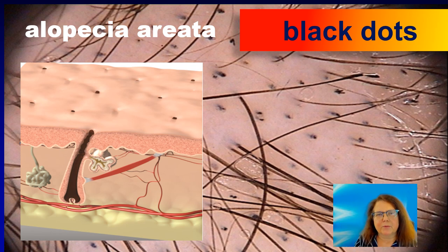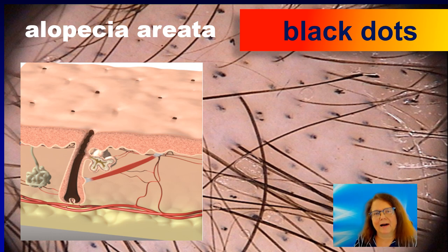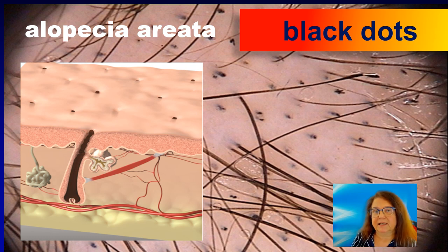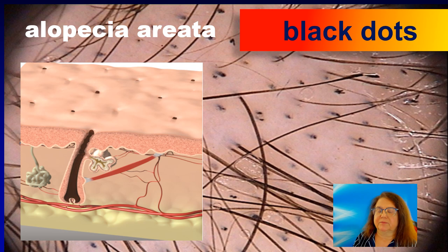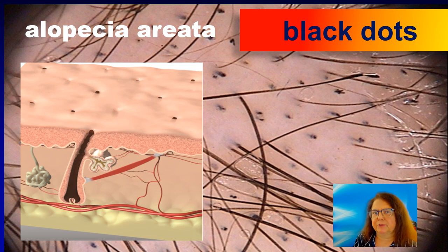In this image we see the typical black dots in trichoscopy. Are they typical for alopecia areata? Yes, they are. Are they specific for alopecia areata? No, they are not. There are many diseases in which black dots may be present, including other types of anagen effluvium, but also trichotillomania, and even sometimes black dots may be present in patients with cicatricial alopecia.